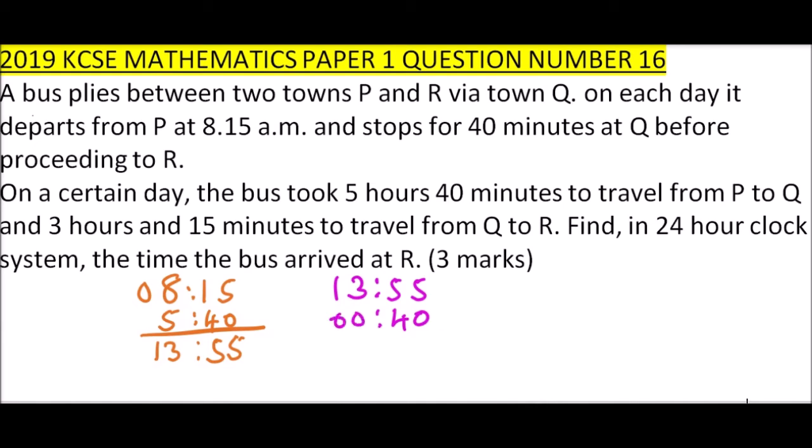When you add, you get 95 minutes. We know an hour has 60 minutes, so we carry one - this is 4, and this is 1. So 14:35, that is when it departed to point R.